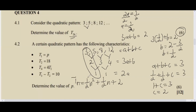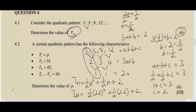Finding the general term earns about four marks. Now for t26, substitute n = 26: t26 = ½(26²) + ½(26) + 2. Calculating this gives t26 = 353. Pause the video and try it yourself, then check your work against mine. That's how you solve that one for six marks.